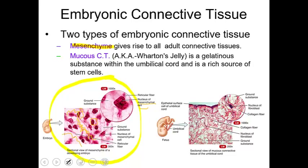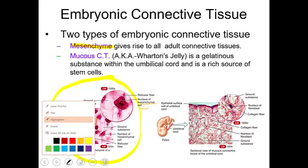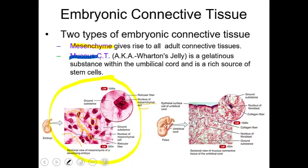The next connective tissue type is Wharton's jelly, also known as mucus connective tissue. It is a very gooey, gelatinous substance present within the umbilical cord. It is not muscularized and does not have nerve endings, so neither the mother nor the baby feels pain when the umbilical cord is cut. Wharton's jelly is a rich source of stem cells. Many people now harvest and store umbilical cord cells in case they are needed in the future for therapeutic use.